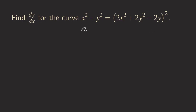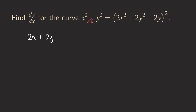We are going to differentiate the whole equation — both the left side and the right side. First, we differentiate x² with respect to x, so we simply get 2x. Then we take the derivative of y². Remember, y is defined as a function of x, so we use the power rule to get 2y, and then by the chain rule we multiply by dy/dx.